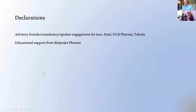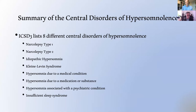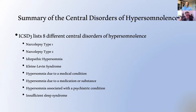I have no conflicts of interest to declare. I'm going to spend the next few minutes talking about what has changed in our understanding of the pathophysiology of these groups of conditions that we term the central disorders of hypersomnolence. Within ICSD-3 there are eight different central disorders of hypersomnolence, including the neurological causes, those hypersomnias related to an underlying medical condition, those associated with a medication or substance — essentially iatrogenic — those associated with a psychiatric condition, and perhaps the most common: insufficient sleep syndrome.